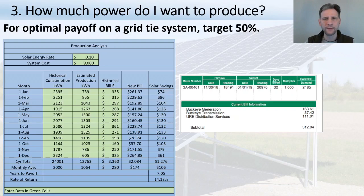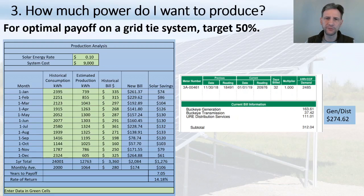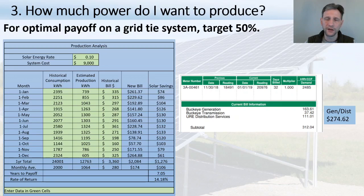The optimum grid-tie system in my view targets about 50% of your consumption. Looking at your bill, you'll typically see generation, transmission, and distribution costs. The transmission cost is usually a flat rate — in my case $35 whether I use zero electricity or three thousand kilowatt-hours, so it's essentially a fixed amount.